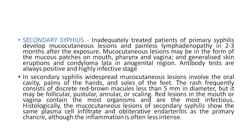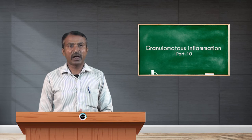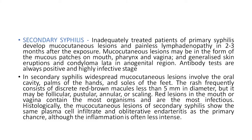In secondary syphilis, inadequately treated patients of primary syphilis develop mucocutaneous lesions and painless lymphadenopathy two to three months after exposure. Mucocutaneous lesions may be in the form of mucous patches on the mouth, pharynx, and vagina, and generalized skin eruption and condyloma lata in the anogenital region. Antibody tests are always positive — this is a highly infective stage. Widespread mucocutaneous lesions involve the oral cavity, palms of the hands, and soles of the feet.